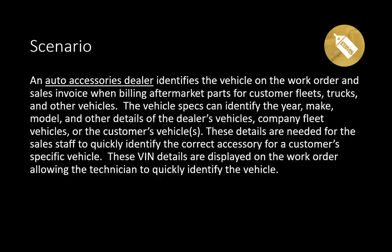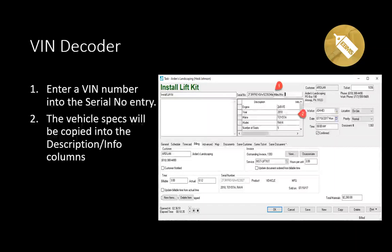Let's look at a scenario. An auto accessories dealer identifies the vehicle on the work order and sales invoice when billing aftermarket parts for customer fleets of trucks and other vehicles. The vehicle specs can identify the year, make, model, and other details of the dealer's or customer's vehicle. These details are needed for sales staff to quickly identify the correct accessory for a customer-specific vehicle, and the VIN details are displayed on the work order, allowing the technician to quickly identify the vehicle they are working on.